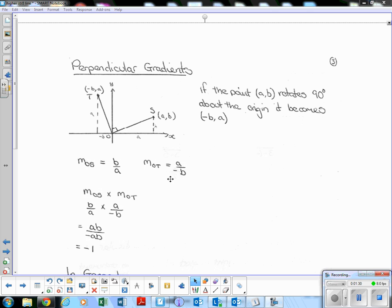All right, let's see what happens when we multiply those together. B over A times A over negative B is AB over negative AB. Well anything over itself is one, cancels down to one, and we've got a negative sign on the bottom. So the gradient of any point when you multiply it by its perpendicular gradient is negative 1.